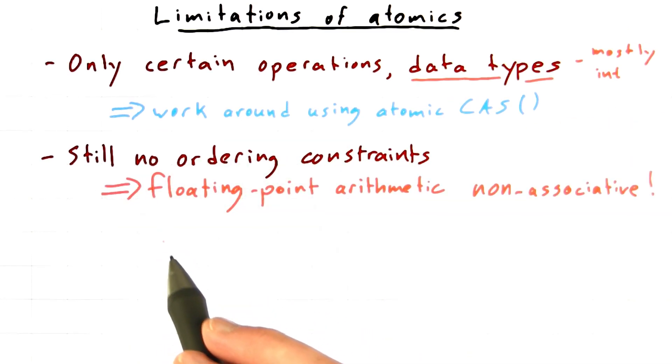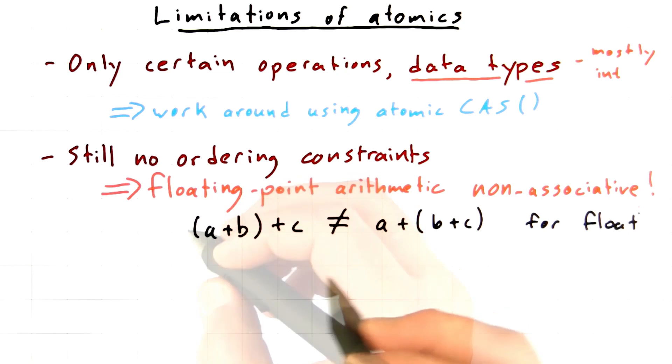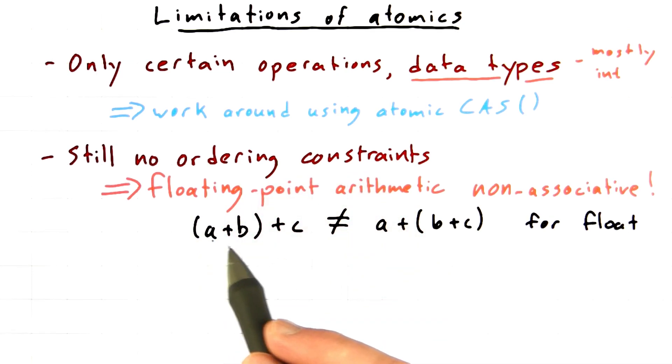This is important because floating point arithmetic is actually non-associative. In other words, the quantity of A plus B plus C is not the same as A plus the quantity of B plus C. It's real easy to convince yourself if you look at numbers like A equals 1, B equals 10 to the 99th, and C equals negative 10 to the 99th.